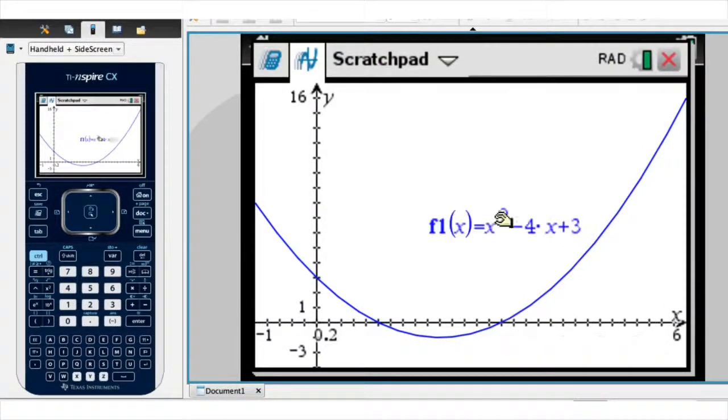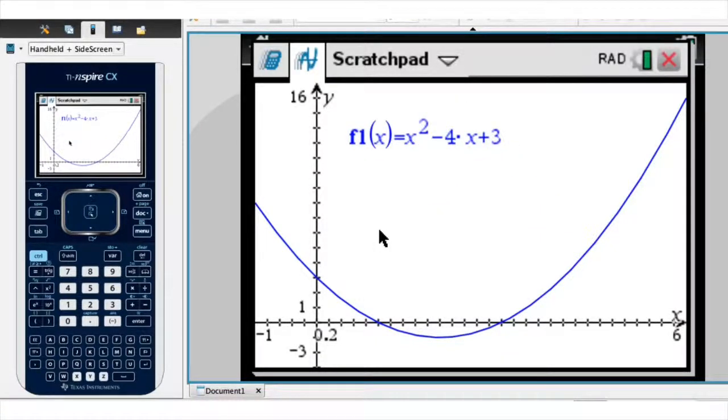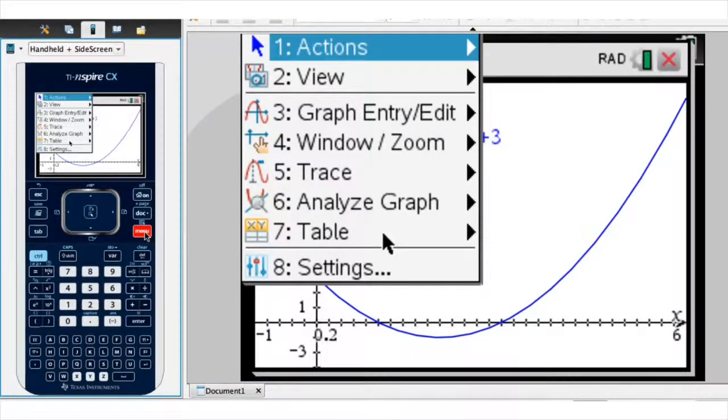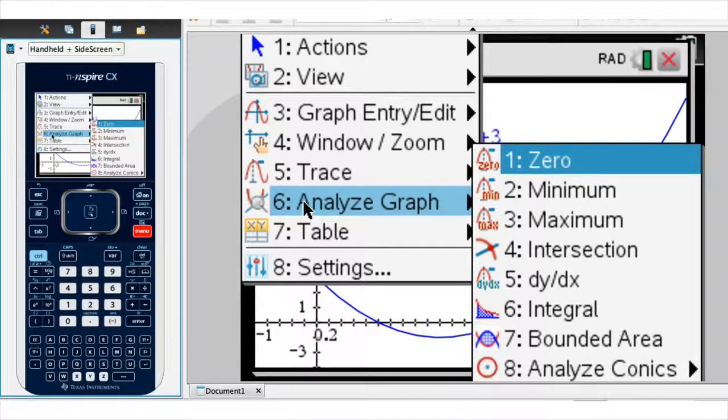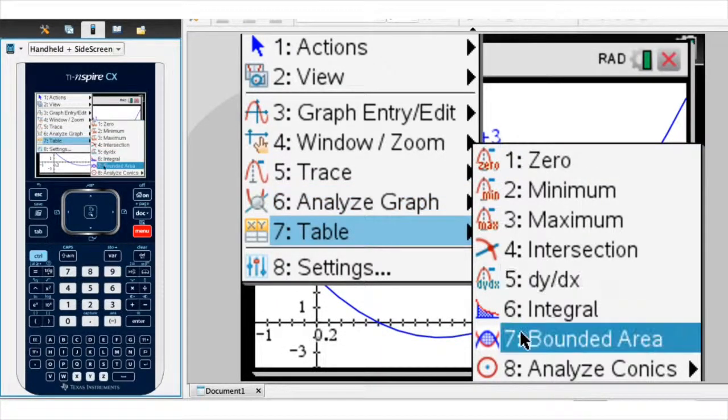To find the area, here's what we do. I go ahead and click on menu. I then select the sixth option, analyze graph. And I then select the seventh option, bounded area. And I click on it.